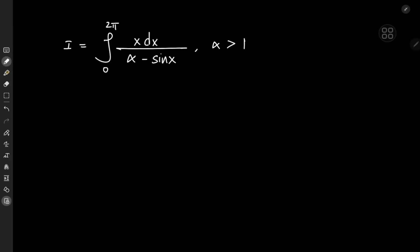Today we have a really cool trigonometric integral suggested by my friend Danny from the Netherlands. It's the integral from 0 to 2π of x dx divided by (α minus sin x), where the parameter α is greater than 1. It's a pretty cool generalized structure, and the solution development is pretty satisfying as well.